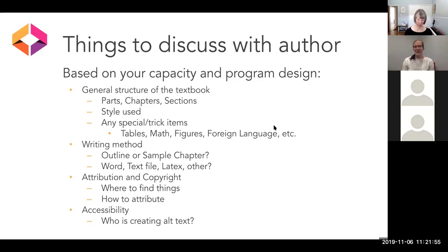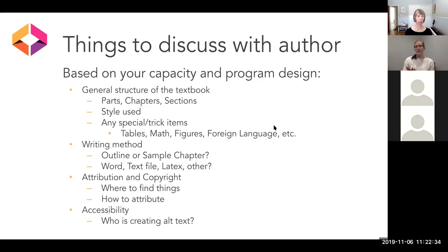Attribution and copyright is a huge issue when working with open textbooks — it's something you can never discuss too much. Accessibility is also key — make sure it's clear who in the process is creating the alt text. For engineering textbooks, for example, you can't write alt text for figures if you're not an engineering expert. If the author doesn't have time to write alt text themselves, is there a student you can hire? At Virginia Tech they work with authors to hire a student using grant funding to create some of the alt text, then share it in a way that can be added to the files.